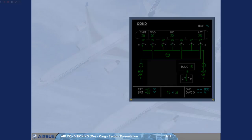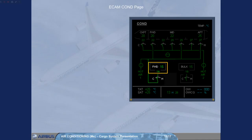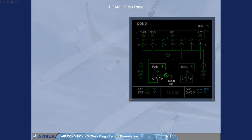The forward cargo indications can also be displayed on the ECAM COND page. If heating is installed, they include the forward cargo temperature indications — the duct inlet temperature and the ambient temperature — and the trim air valve indication. If cooling is installed, the cold air valve indication is shown, which can be partially open, fully open, or fully closed. Note: like the bulk cargo, all the isolation valves are not represented on the ECAM.